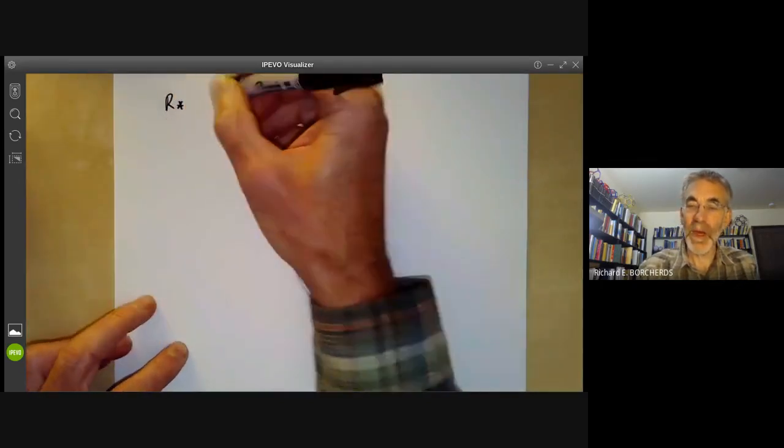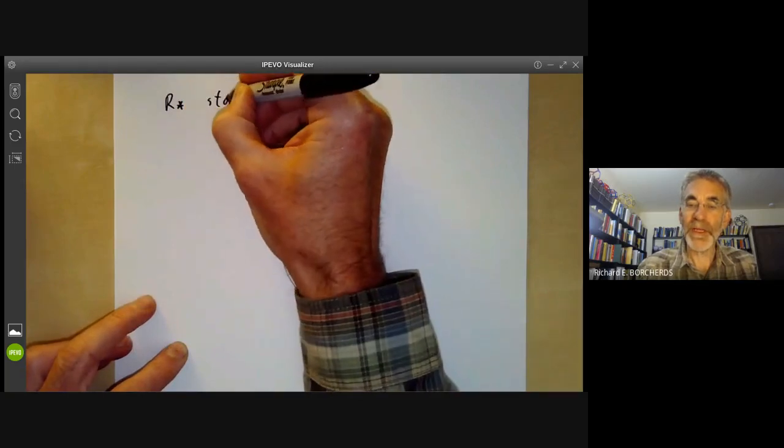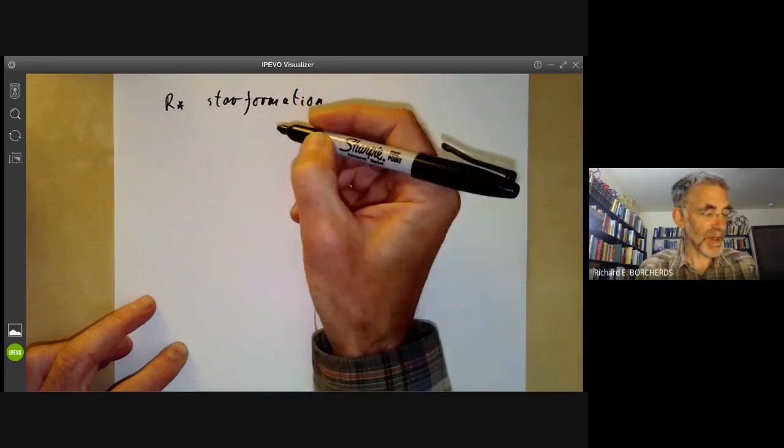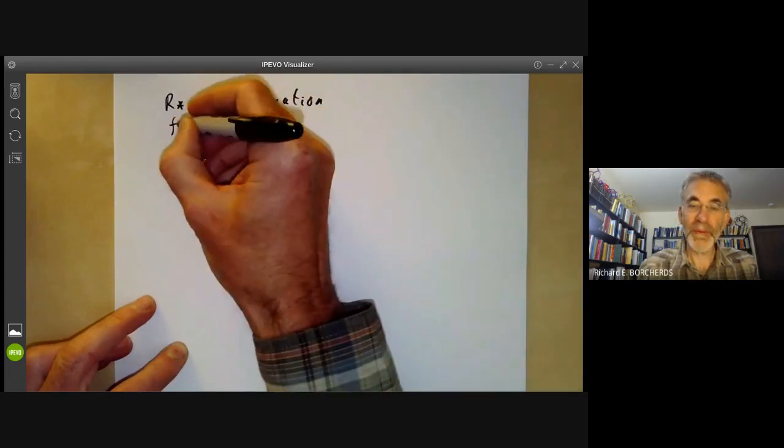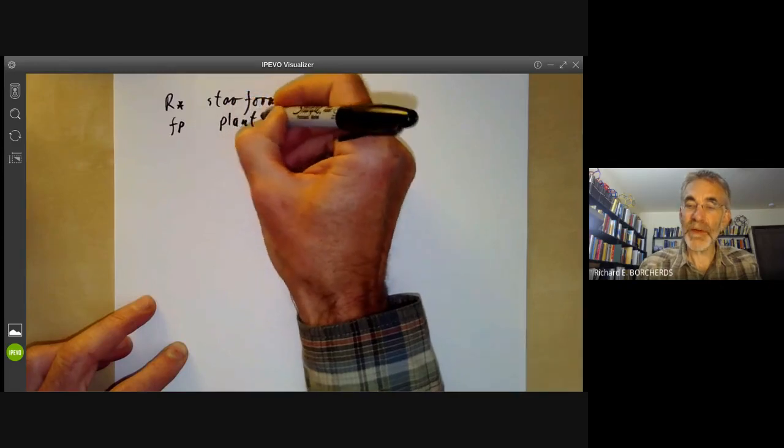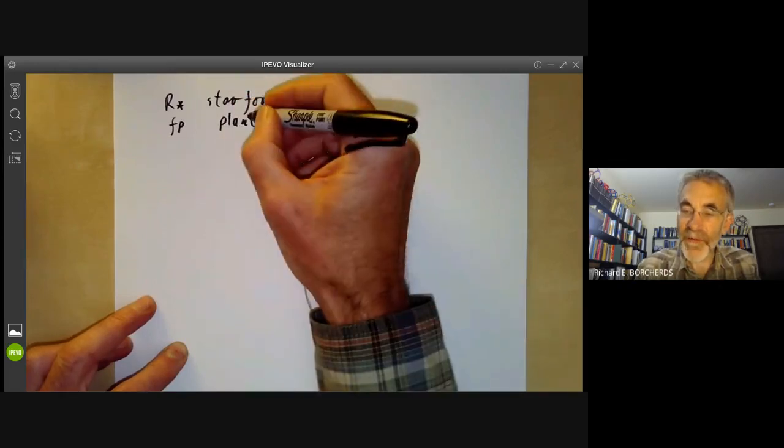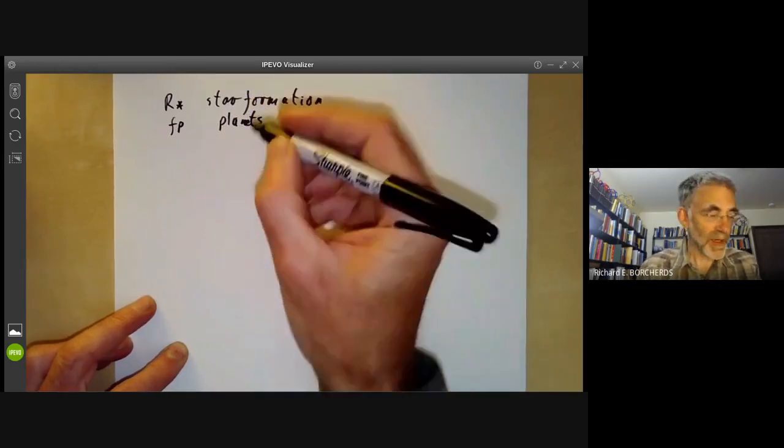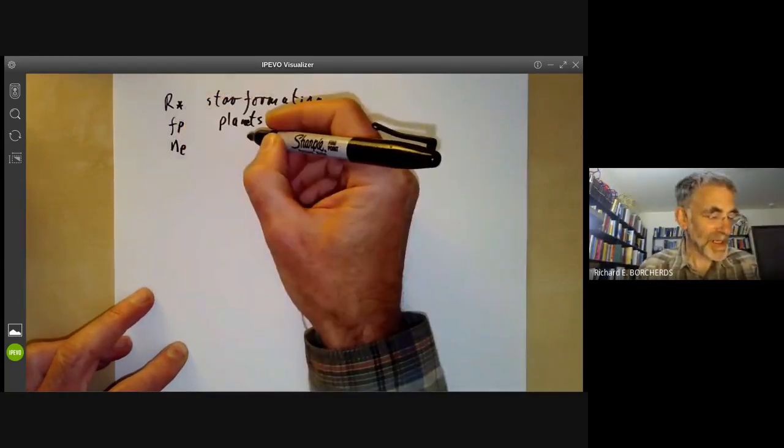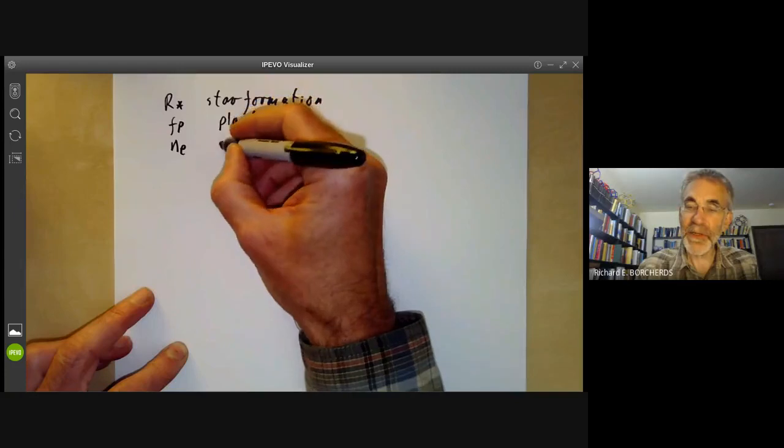The Drake equation tries to estimate the number of civilizations we can communicate with by multiplying together a lot of numbers. So the numbers are as follows. First of all, there's r star, which is something to do with the rate of star formation, how often stars are formed in the galaxy. Then there's a number Fp, and this gives you the chance that a star will have planets. Next, we have a number Ne, which is an estimate of how many planets are suitable for life.